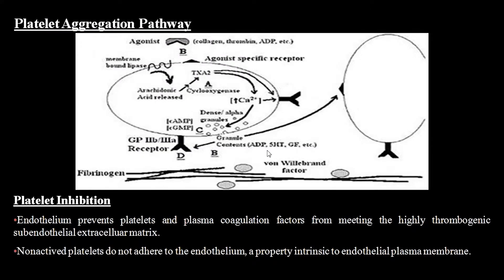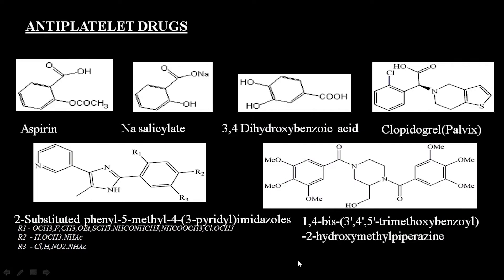Let us look at another example: platelet aggregation, which is a very serious issue leading to thrombosis. The endothelium prevents platelets and plasma coagulation factors from accessing the highly thrombogenic sub-endothelial extracellular matrix. Non-activated platelets do not adhere to the endothelium, but activated platelets do — that is the big problem. There are many anti-platelet aggregation drugs; aspirin, sodium salicylate, trihydroxymethylbenzoic acid, and clopidogrel are known examples, along with many substituted phenyl systems.